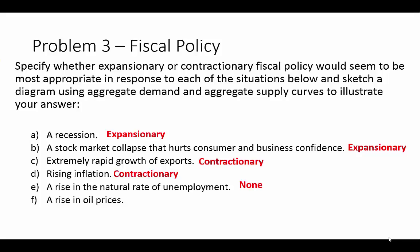Scenario F: a rise in oil prices. That's definitely going to put a damper on the economy, because it's actually going to be shifting aggregate supply. So we need to use expansionary fiscal policy to counteract the decrease in aggregate supply, which will help the economy out.